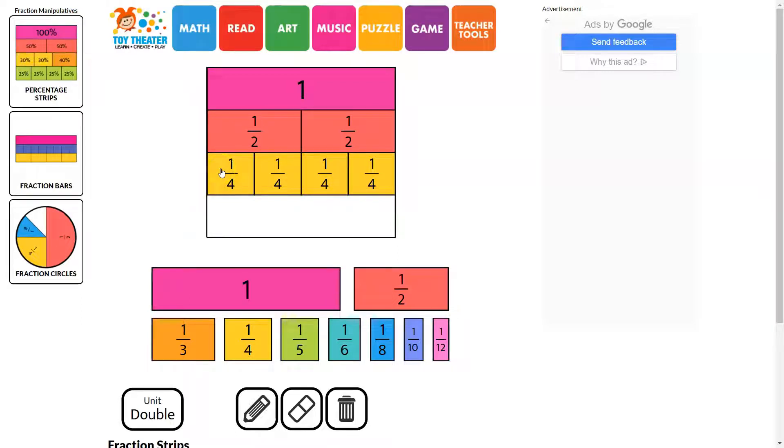The numerator, the number on top, tells them that's how many pieces we're specifically talking about. So if I'm talking about one fourth, I'm only talking about this one. If I'm talking about four fourths, then I'm talking about what's equal to one whole split into four pieces.